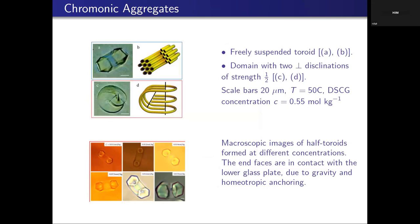So these are three freely suspended toruses. One feature is that they have facets and corners — they are not smooth toruses. This is an artist's illustration of how the columns look in the bulk: columns packed in a torus. There is also a very different structure characterized by two perpendicular defects, which we haven't yet figured out how to model. And in the same experiment, you also see a lot of half-toruses.